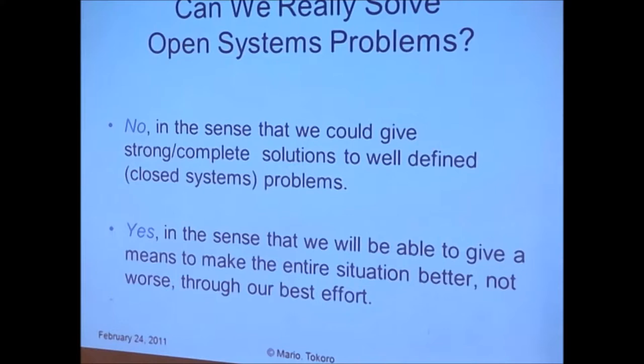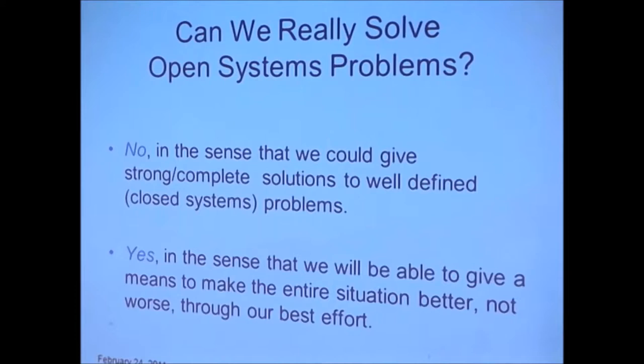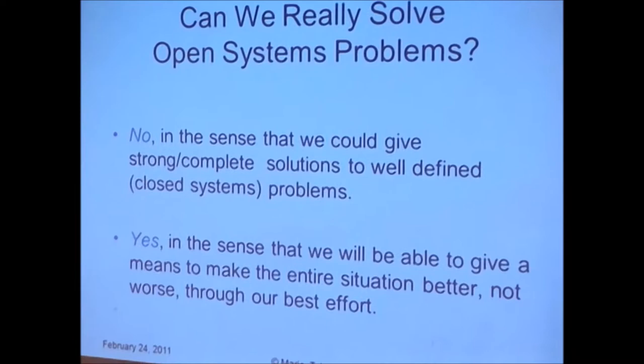I was thinking whether it is possible to solve a problem of an open system that is complex and ever-changing. Usually, maybe not — it seems impossible in the sense that we could give strong and complete solutions as we can for a closed, well-defined, static system. But we can say probably yes, in the sense that we will be able to give a means to make the entire situation better, not worse, through our best effort. So open system science is not that strong — we have to go back and forth, checking whether we are okay. This is rather an attitude of science.